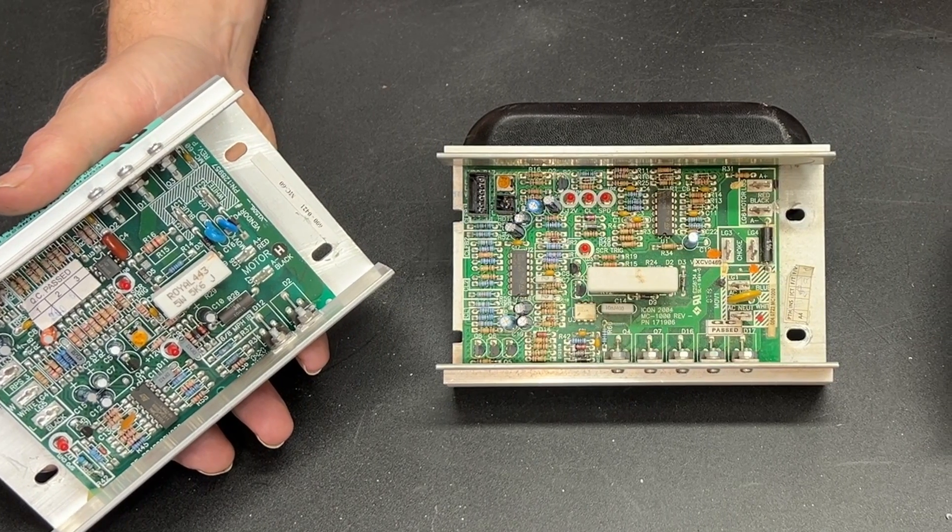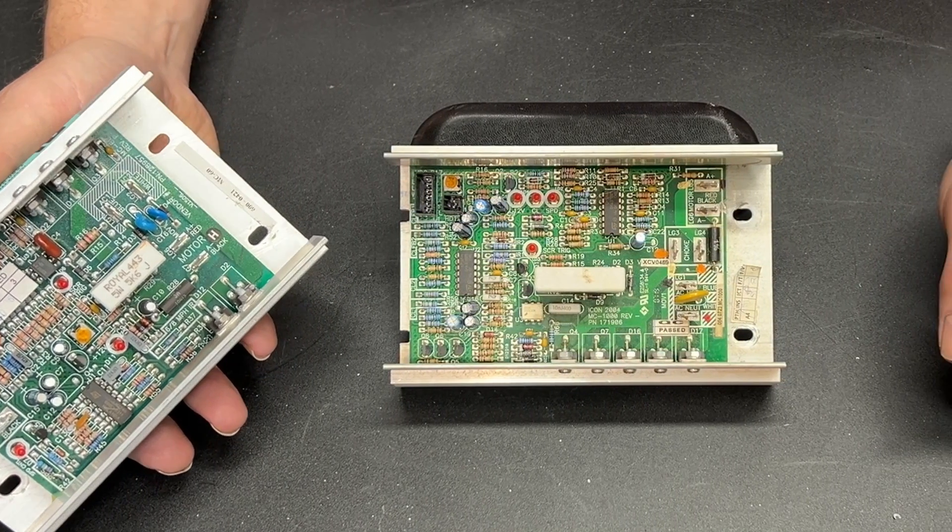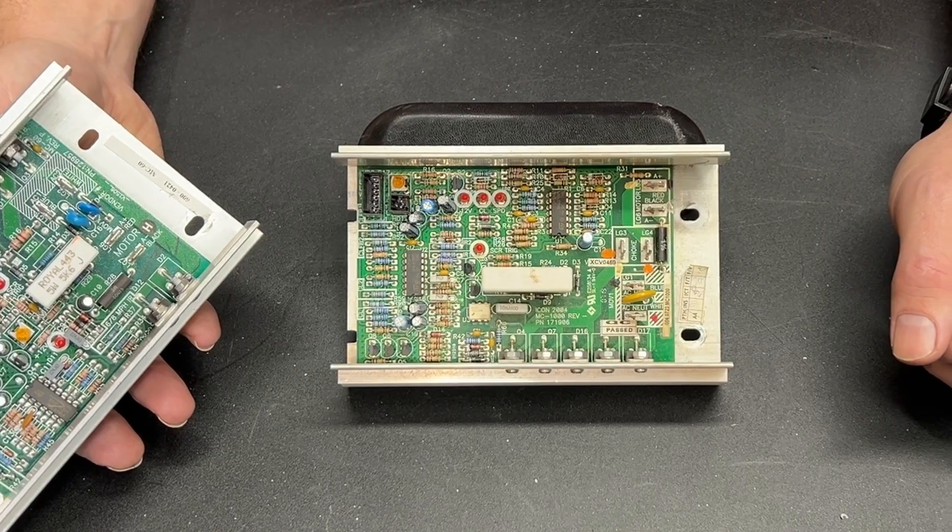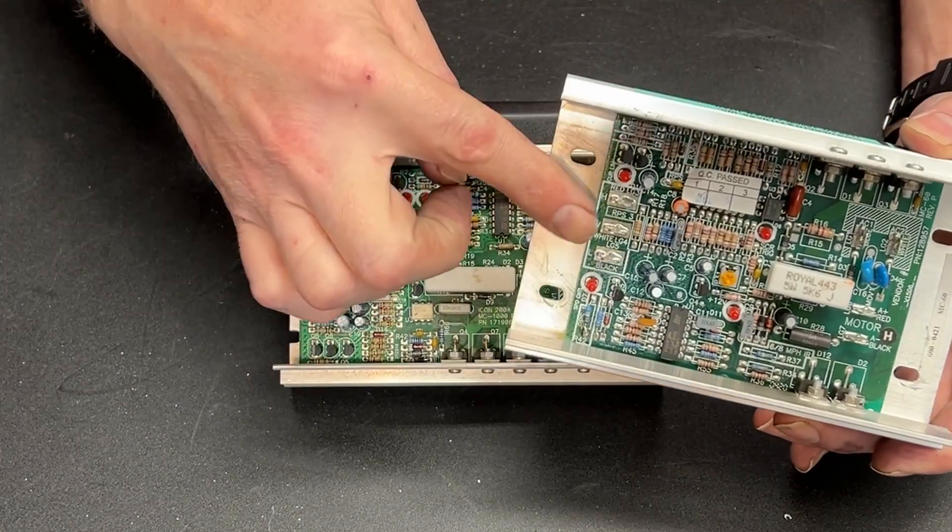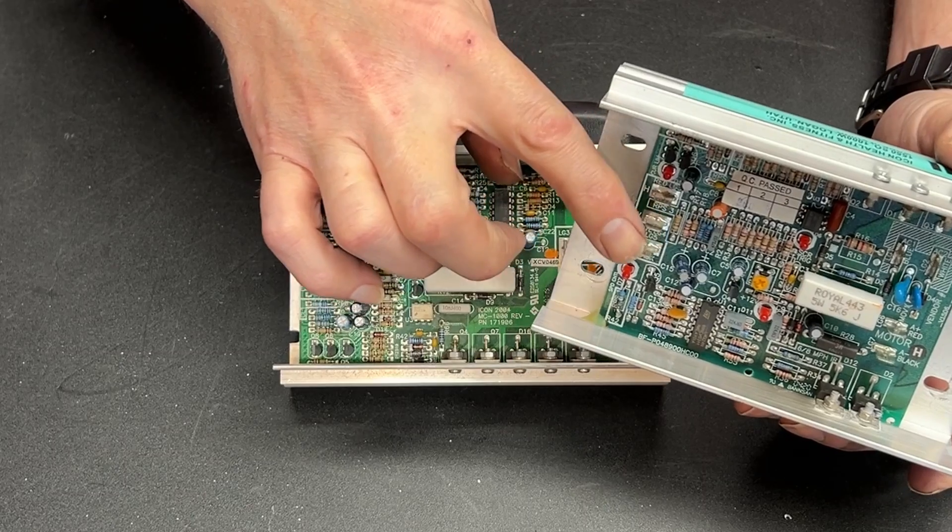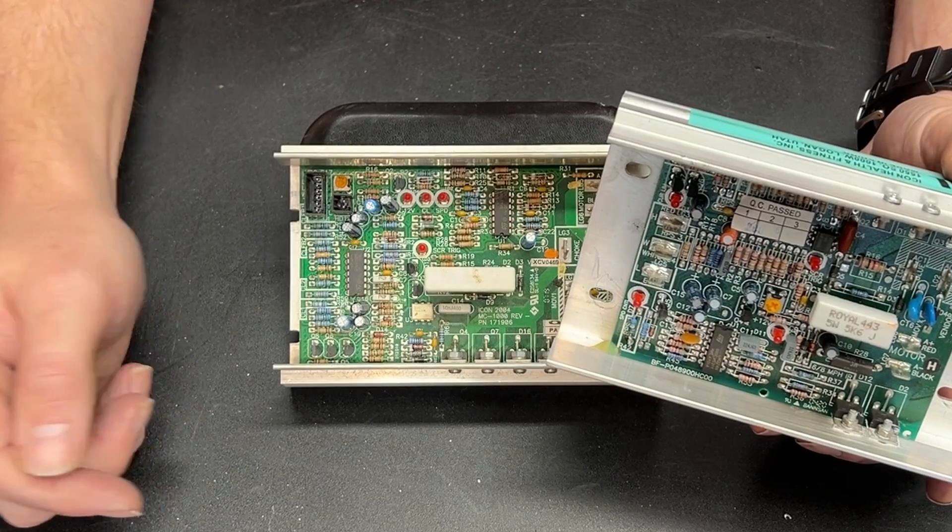One really nice thing about the MC60 is it is really super easy to control. All you have to do is attach a potentiometer to the H, W, and L terminals and you're good to go.